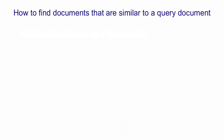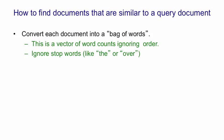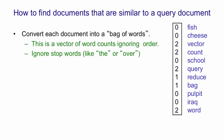To find documents that are similar to a query document, the first thing we do is convert each document into a big bag of words — a vector of word counts that ignores the order of the words. This clearly throws away quite a lot of information, but it also retains a lot of information about the topic of the document. We ignore words like 'the' or 'over', which are called stop words, because they don't have much information about the topic. So if you look on the right, I've done the counts for various words — they're the counts for the document on the left. The non-zero counts are for words like vector, count, query, reduce, bag, and word, which tells you quite a lot about what the document is about.